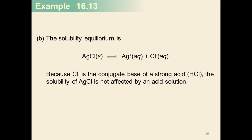Let's walk through the solubility equilibrium for silver(I) chloride. The chloride anion is the conjugate base of a strong acid, so it has no appreciable strength. The acidic solution is not going to react with or be neutralized by the chloride anion. Therefore, the solubility of silver chloride is no greater in an acidic solution than it would be in a neutral solution.